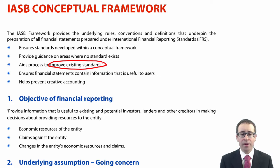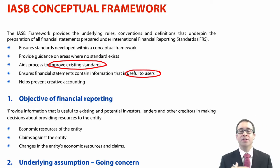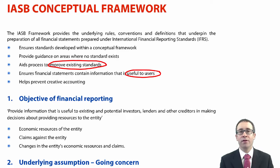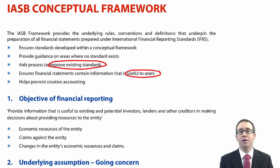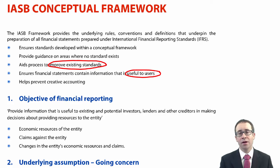Also, the reason why we have the framework is that it ensures that the information is useful to the users — meaning that people can understand the information that is presented to them and therefore will make the same economic decisions. If we have information that is not useful, then we will have different user groups making different decisions, which will not help the stability of any economy. And finally, it helps prevent creative accounting. If people follow the principles and stick to the guidelines given, then there should be no possibility of accountants and preparers of financial statements introducing creative accounting techniques. If there are creative accounting techniques, we run into difficulties like we've seen with the WorldCom and Enron scandals.